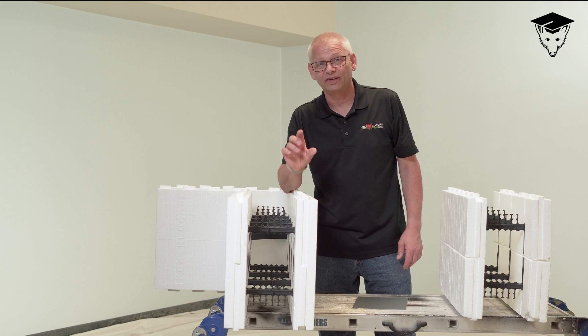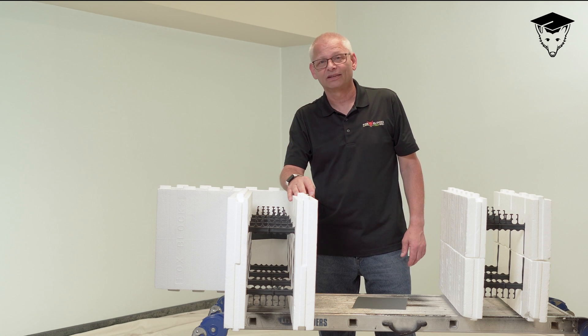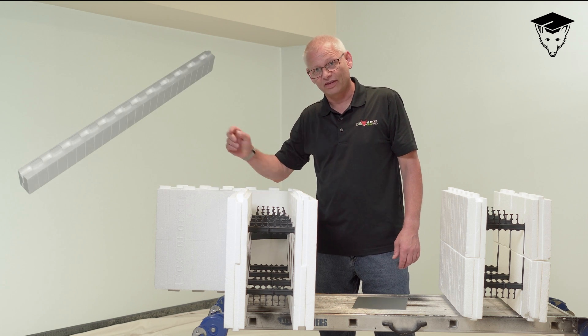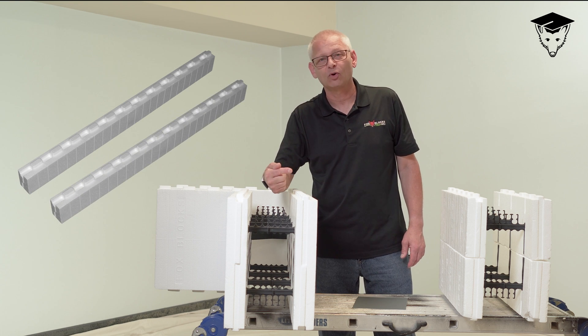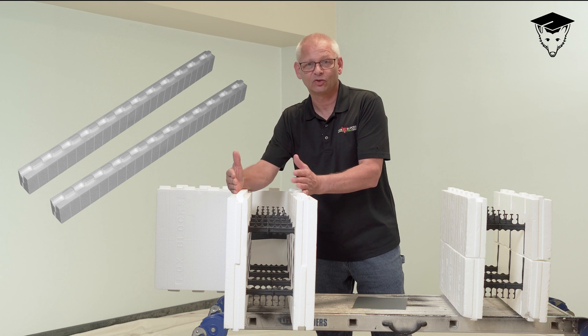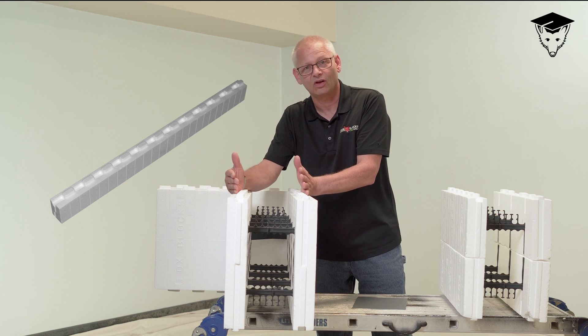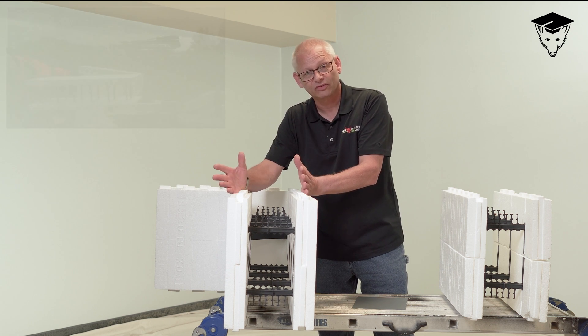If you're building your Fox Blocks wall and you need that little bit of extra height, typically you're going to use our block extender. That's four inches high of just raw foam with interlock on both sides. Now you need two of them to do four lineal feet of wall because you need one on either side of the wall. It works great.